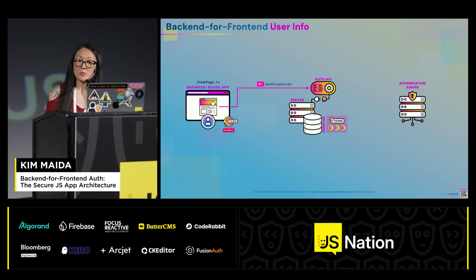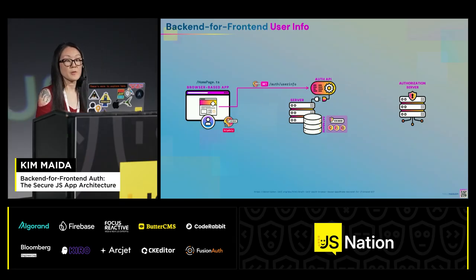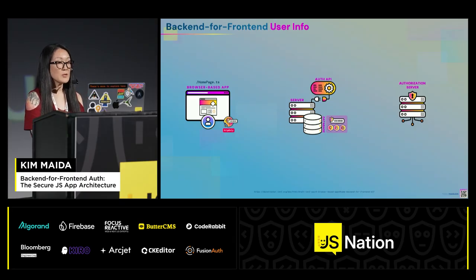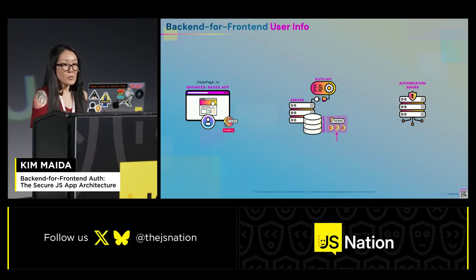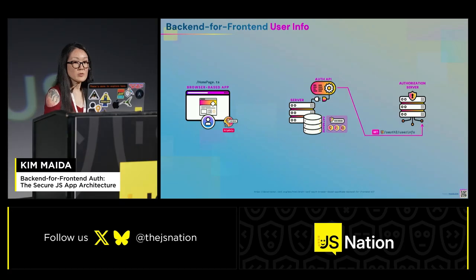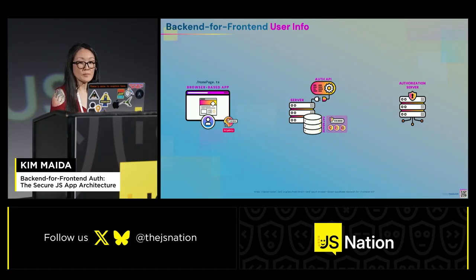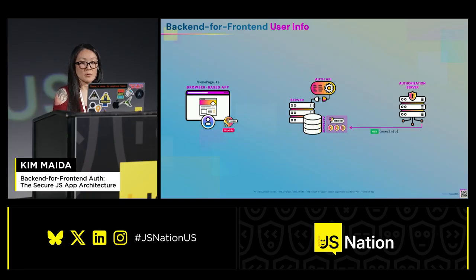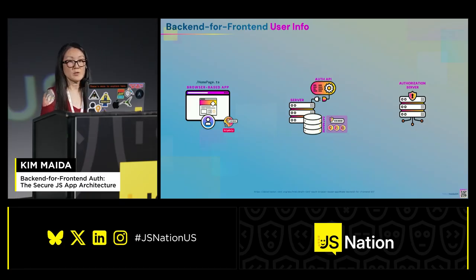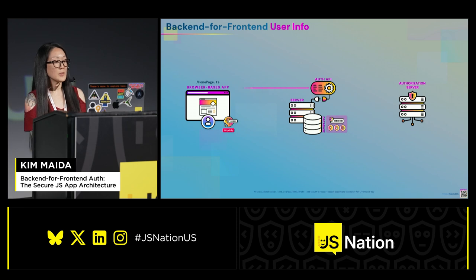When the app needs user data, it can call a user info endpoint with the session cookie. The back-end looks up the session and then can either decode the ID token or call the authorization server's user info endpoint with the access token in the authorization header. The authorization server returns user info, which is stored in the user's session and then sent to the front-end.